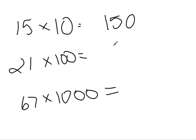21 times 100. Lauren, what's 21 times 1? 21. How many zeros do I have in 100? 2. So what should I have on my answer? 2 zeros. So my answer is 2,100.